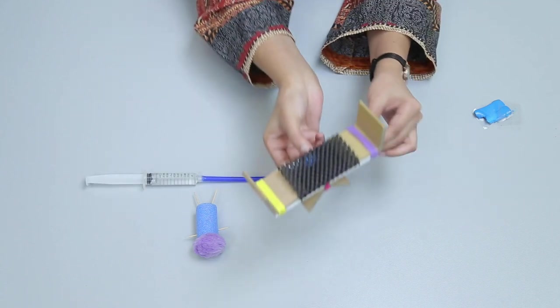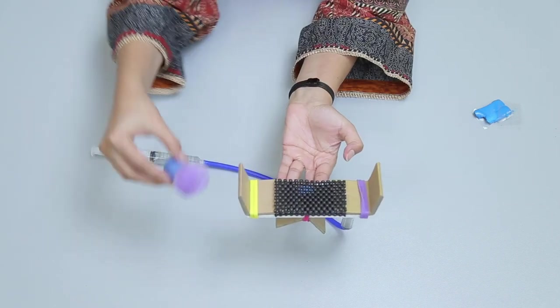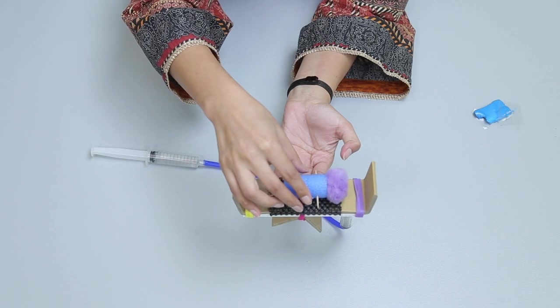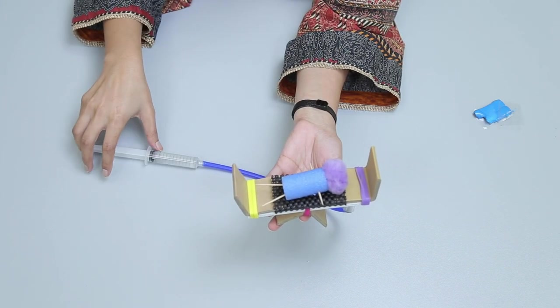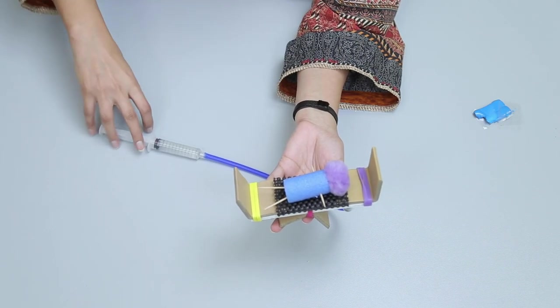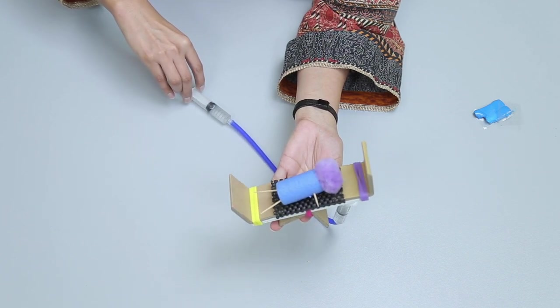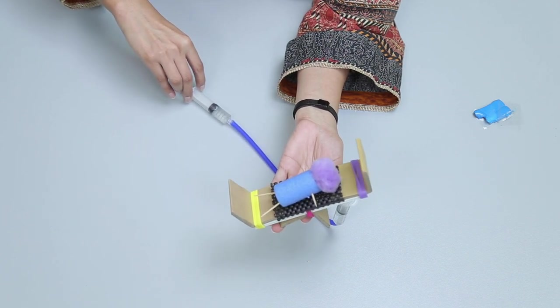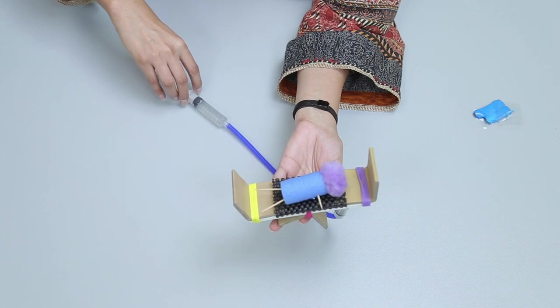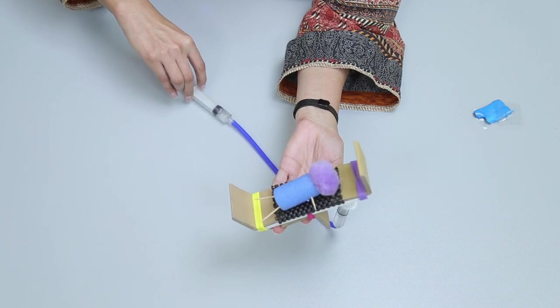Put the baby on the swing. Now push the plunger of water filled syringe. The swing starts to move as the water flows from one syringe to another. Keep moving the swing of the baby by pulling and pushing the plunger of the syringe.